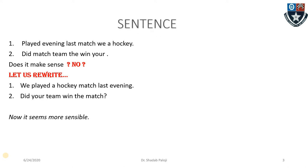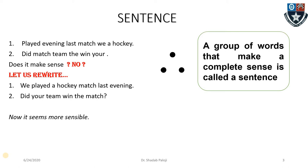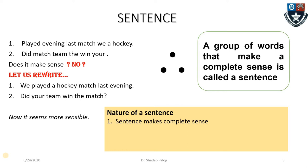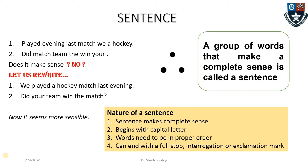This structure is what we call a sentence. A sentence is a group of words that makes complete sense. Its features: it makes complete sense, it begins with a capital letter, words need to be in proper order, and it can end with a full stop, a question mark, or an exclamation mark.